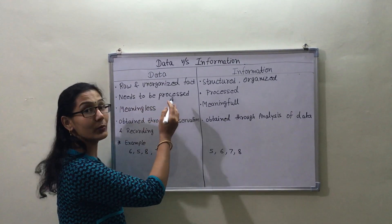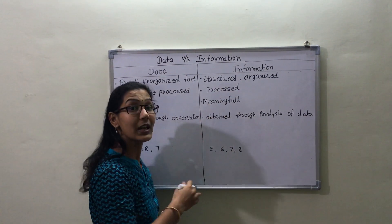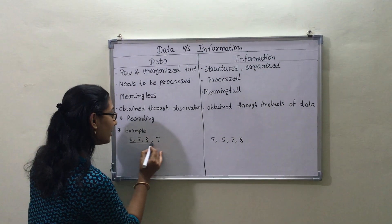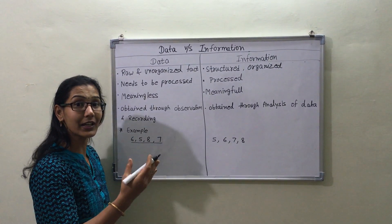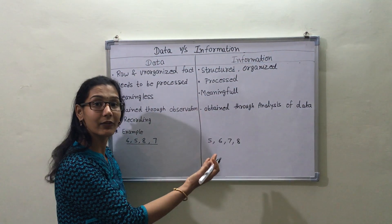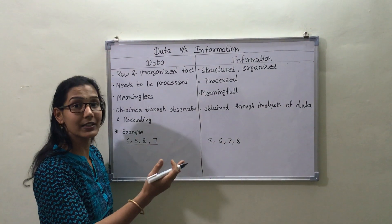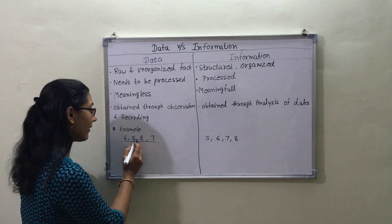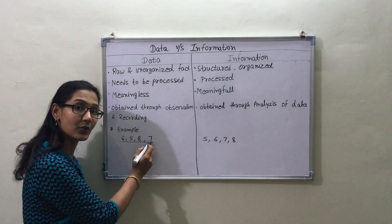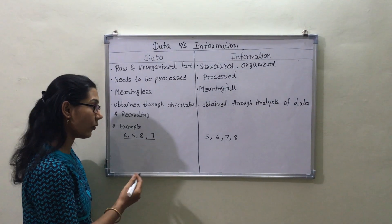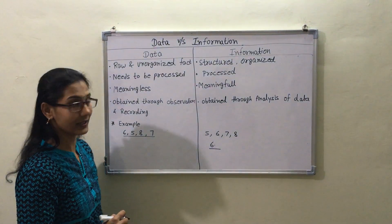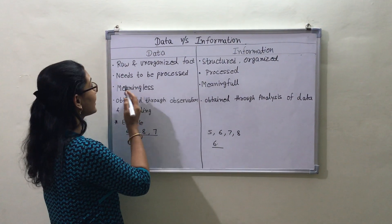The second point is data needs to be processed, while information is processed data. For example, when we take the average of these numbers, that is information. So: 6 + 5 = 11, + 8 = 19, + 7 = 26, divided by 4 equals 6.5. This is the processed data.